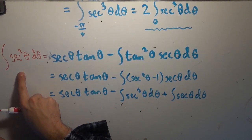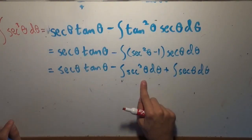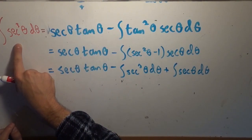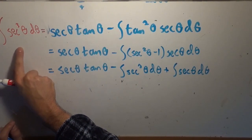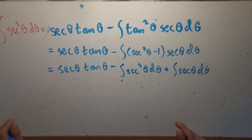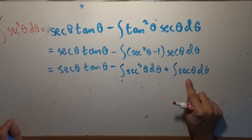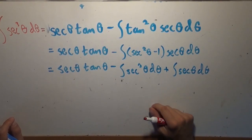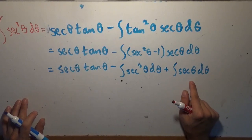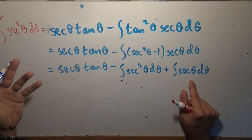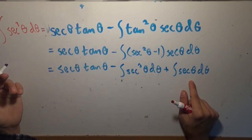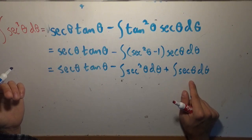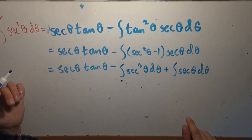Which means we can add it over, and we end up with the representation: adding that over gives two times the integral of secant cubed, so we can just divide through by two to get the right answer. The integral of secant is a very interesting thing to derive — Papa Flammy just did a great video on deriving it in a different way. But we're going to go with the standard result: the natural logarithm of the absolute value of secant theta plus tangent theta.